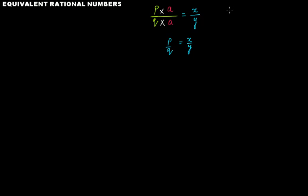Similarly, if your rational number is p over q and you divide both p and q with the same number — let's say b — then p divided by b gives you s and q divided by b gives you t. This s over t, obtained by dividing the numerator and denominator by the same number b, is also an equivalent rational number of p over q.